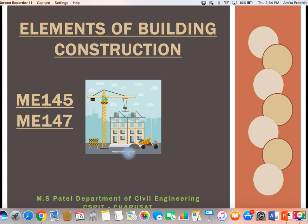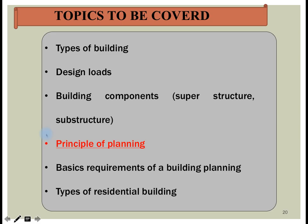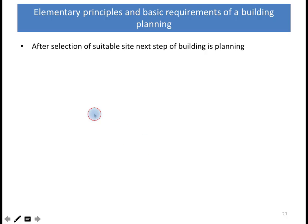Hello students, today we are going to discuss the Elements of Building Construction chapter. This chapter is common for both subjects, ME 145 and ME 147. If you have seen the topics already discussed in this chapter — types of building design loads, building components — the topic we are going to discuss today is Principles of Planning.